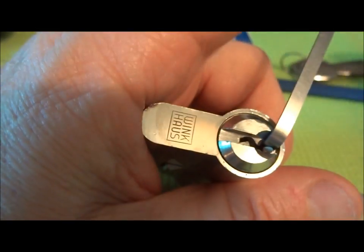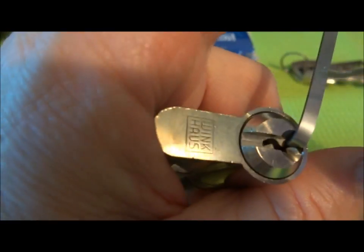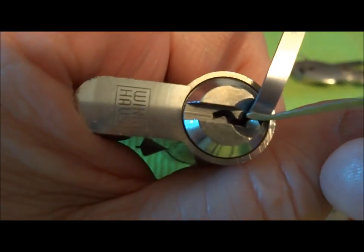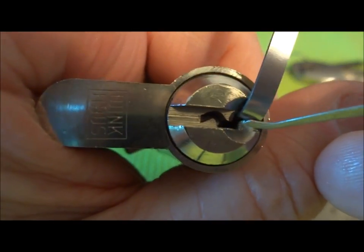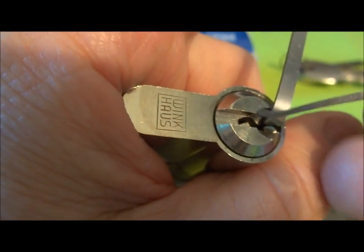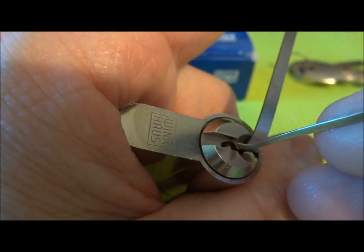I guess it taught me a lesson: don't make too many assumptions, especially when they're wrong like they were on this lock. So let's start picking. As with serrated pins, keep light tension—you can't overset them. Just be very gentle and basically feel for the clicks. I'm going to have to start from the front.